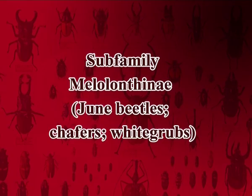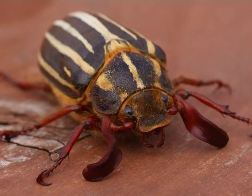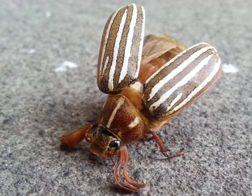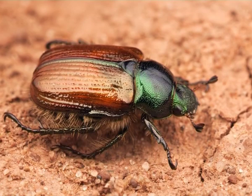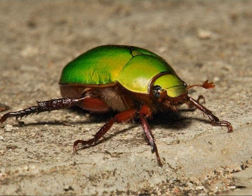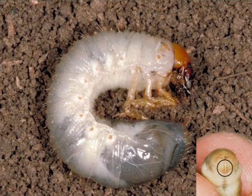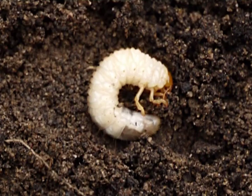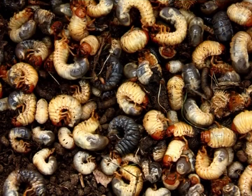Subfamily Melolonthinae includes June beetles, chafers and white grubs. Here the hind leg tibia is without apical spur. Tarsal claws on hind legs are usually bilobed. Clypeus is not emarginated laterally and labium is sclerotized. Generally only one pair of abdominal spiracles are exposed below the edges of the elytra. They are phytophagous. Larvae usually feed on roots of grasses and other plants, and adults usually feed on leaves and flowers. Example: Holotrichia serrata.